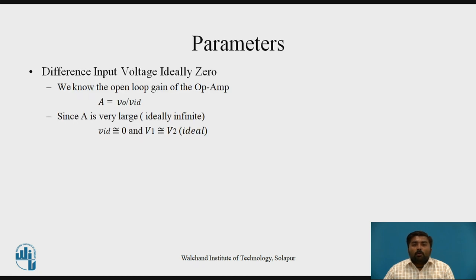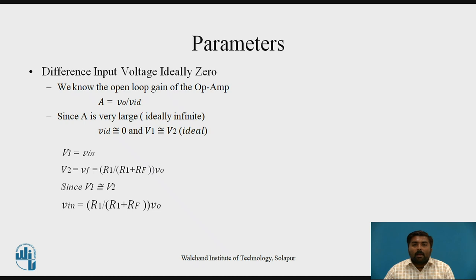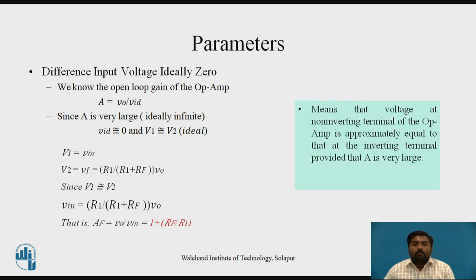The next parameter is the difference input voltage, which is ideally 0. Since the open loop gain A equals Vo upon Vid and A is much larger ideally, Vid nearly equals 0, meaning V1 approximately equals V2. So V1 equals Vin and V2 equals Vf, which is R1 upon R1 plus Rf into Vo. Since V1 equals V2, the final equation for AF equals Vo upon Vin equals 1 plus Rf upon R1. The voltage at the non-inverting terminal approximately equals the voltage at the inverting terminal when A is very large.